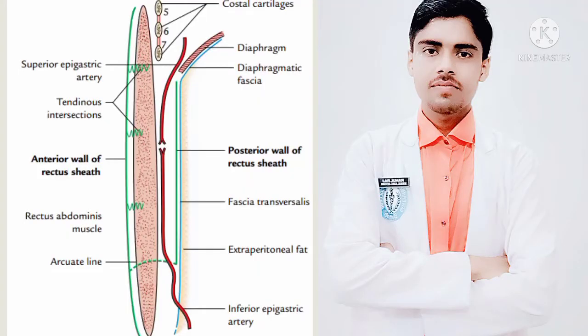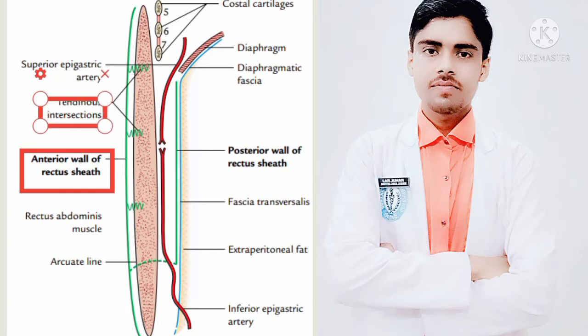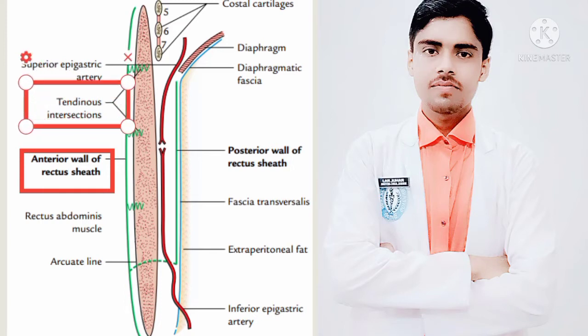Rectus sheath is an aponeurotic sheath covering the rectus abdominis muscle. We will discuss about the anterior wall of the rectus sheath. As you can see in the figure, this is the anterior wall of the rectus sheath — it completely covers the muscle from end to end and is firmly adherent to the tendinous intersections of the rectus muscle, as shown in the figure.